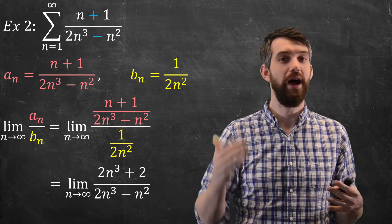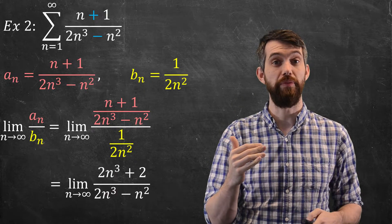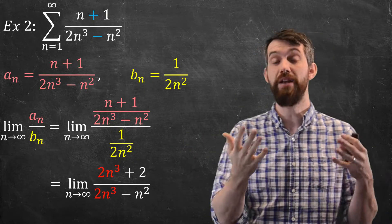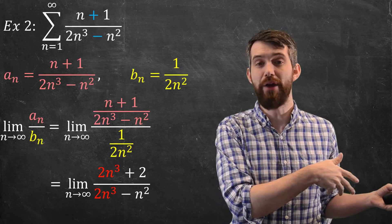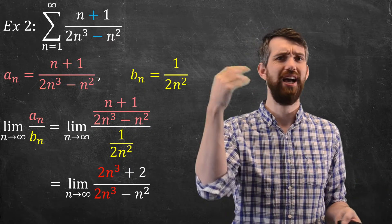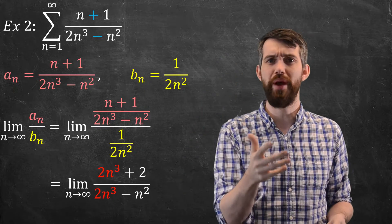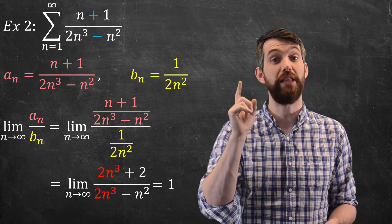How do we do this limit? Well, highest power on the top, highest power on the bottom, they're both the same. They're both n cubed. The smaller order terms don't matter in my limit as n goes to infinity, so it's just a 2n^3 dominating over a 2n^3. That cancels and I'm just left with 1.